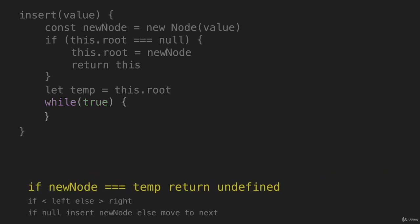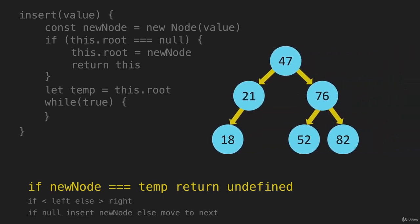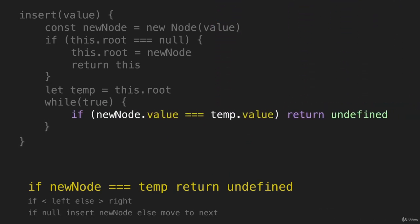If the new node value equals temp dot value, return undefined. That is the situation where we're trying to insert a node that is the same value as a node we already have in the tree. At any time as we're iterating through this tree and we find a match, we're going to return undefined.